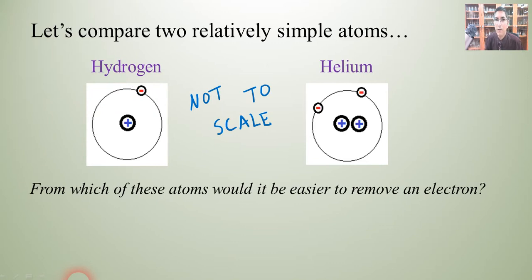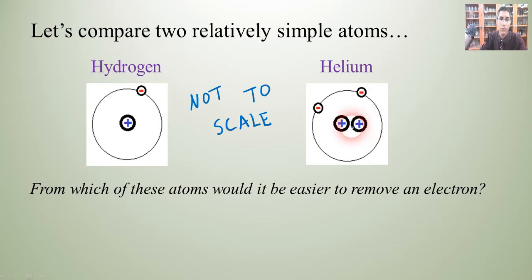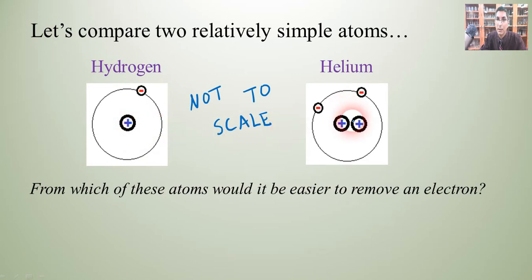Now, I have a question for you: from which of these atoms would it be easier to remove an electron? So we have hydrogen and we have helium. Well, one thing that we notice is that helium has two protons in the middle. We have two atoms with the same number of energy levels, but helium has more positive charge in the middle. As it turns out, it would be much easier to remove an electron from hydrogen than it would from helium.